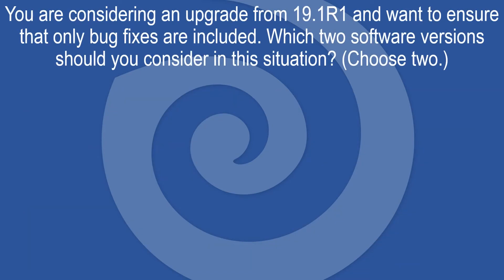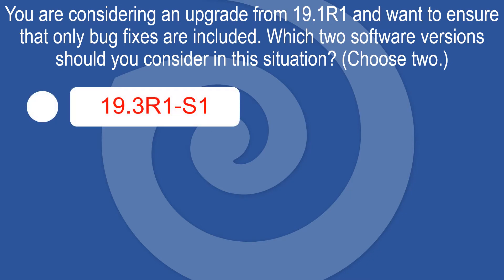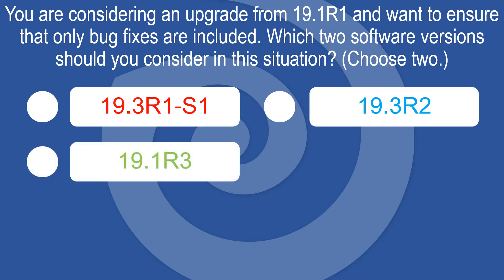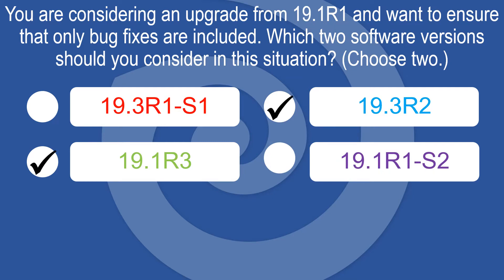You are considering an upgrade from 19.1R1 and want to ensure that only bug fixes are included. Which two software versions should you consider? Choose two. The options are: 19.3R1s1, 19.3R2, 19.1R3, and 19.1R1s2.